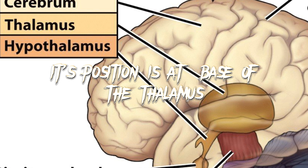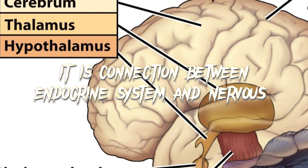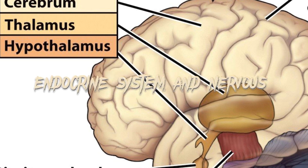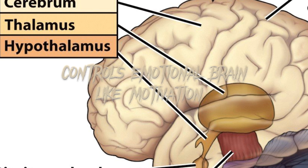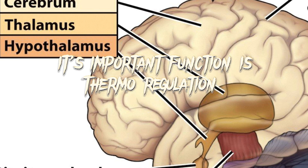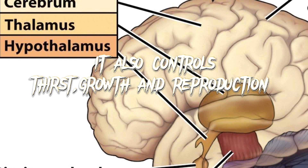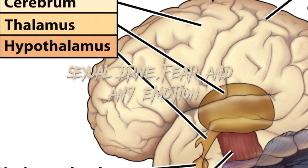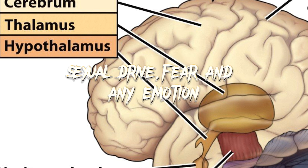The hypothalamus is positioned at the base of the thalamus. It forms a connection between the endocrine system and the nervous system. It controls emotional functions like motivation, and an important function is thermal regulation. It also controls growth and reproduction, as well as sexual drive, fear, and emotion.